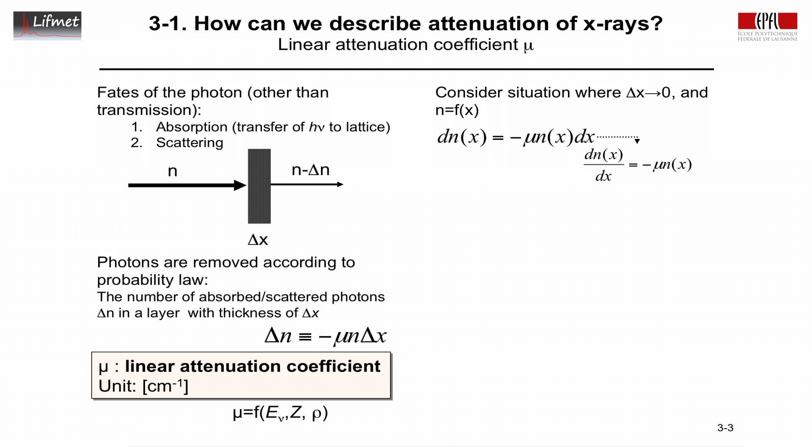That's a first order differential equation. And we know the solution, the derivative of a function equals to the function times a constant. And the solution is therefore simply given by the exponent law. So the number of photons after having passed through a tissue at position x is equal to the incident photons n₀, that's the number of photons that arrive from the outside on our object, times e to the minus μx.